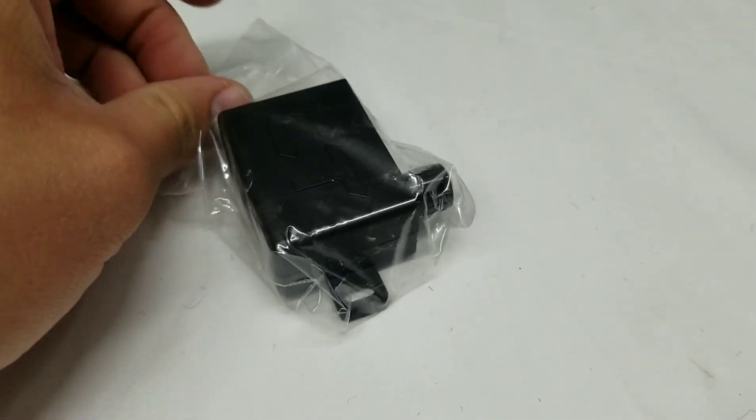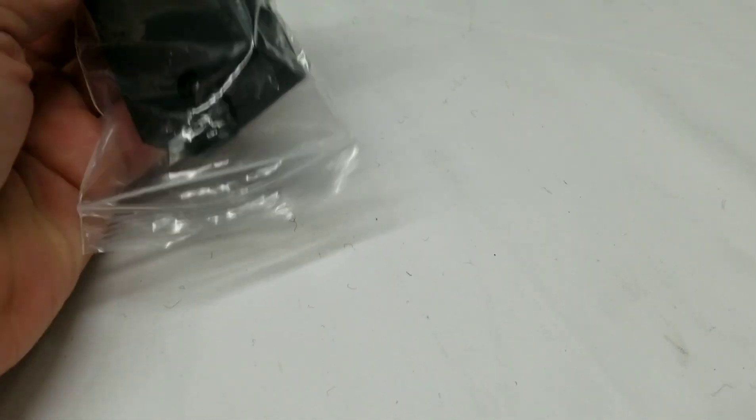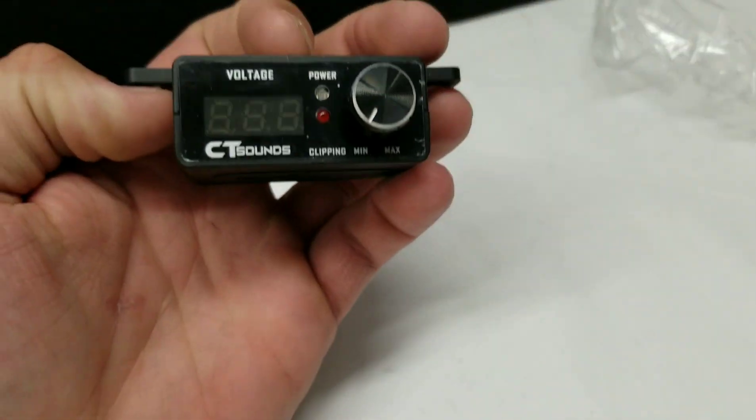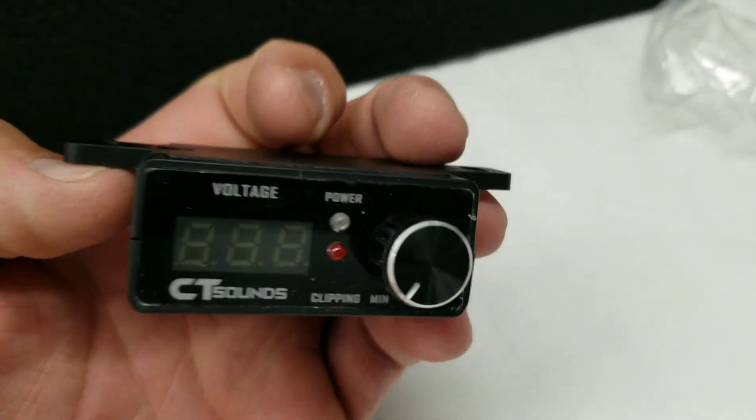Here's the actual knob itself. Really a nice unit. It's got a built-in voltmeter, built-in clipping light, and a power indicator.